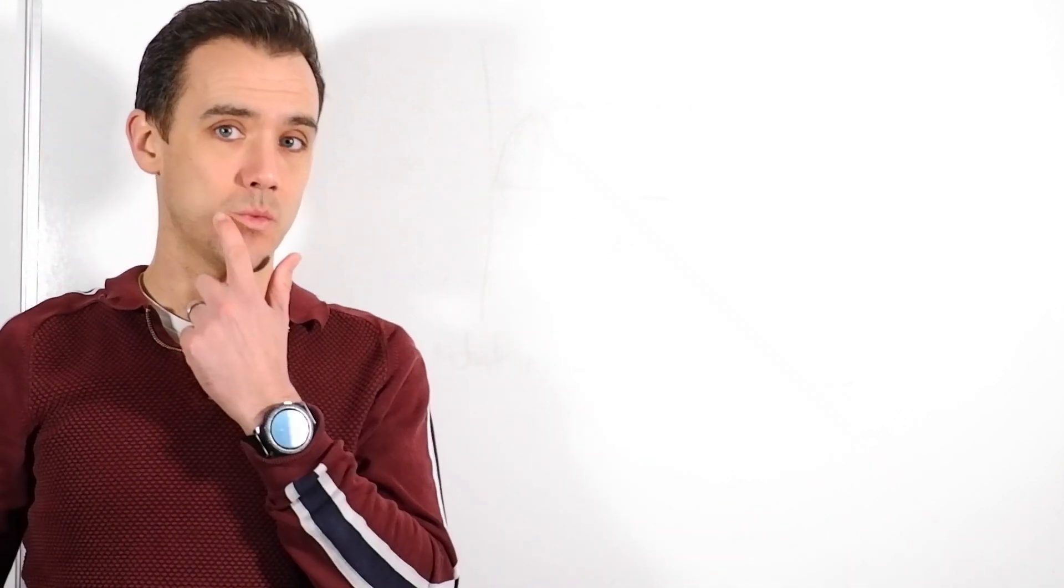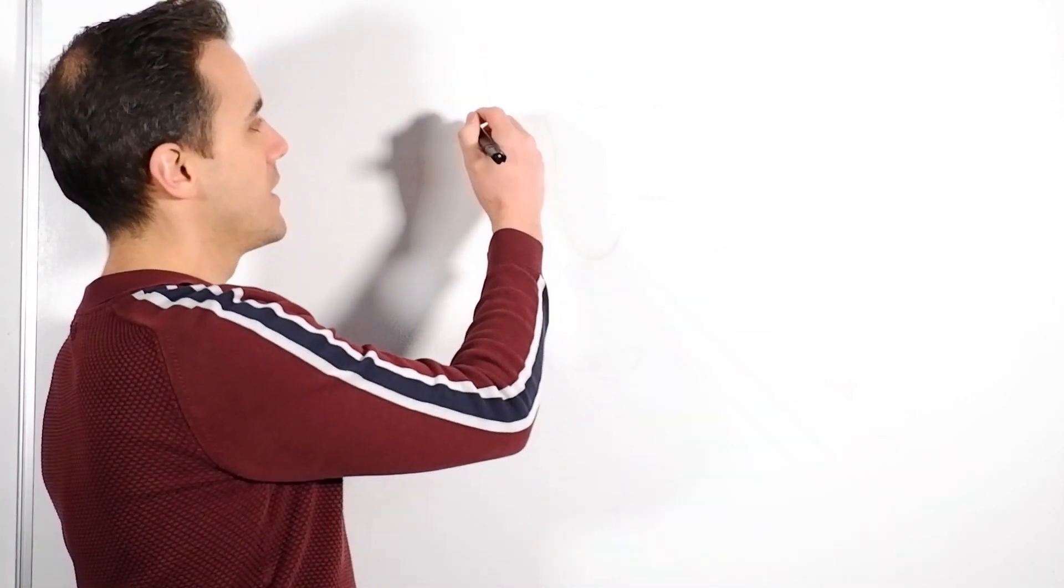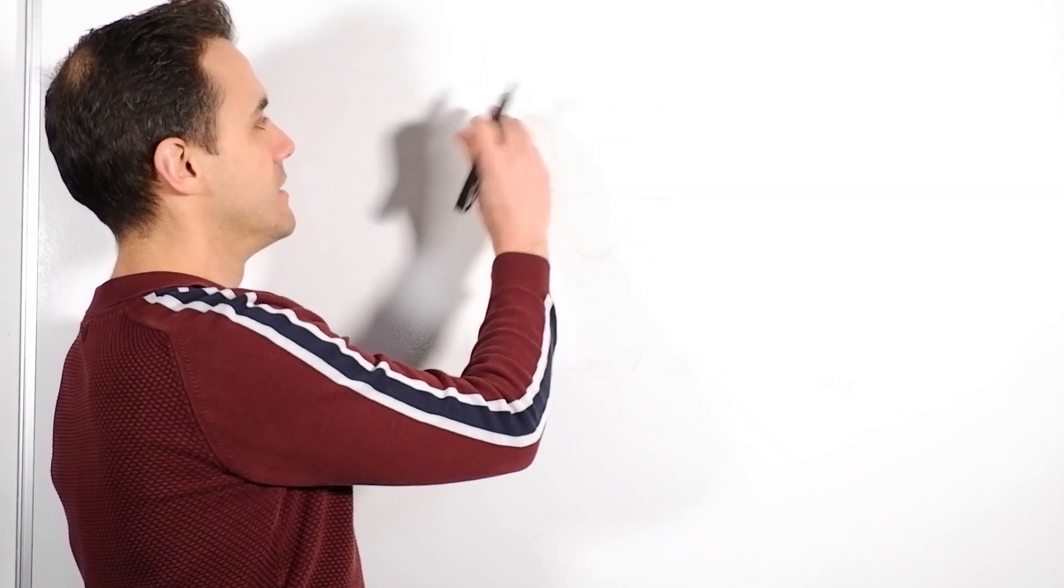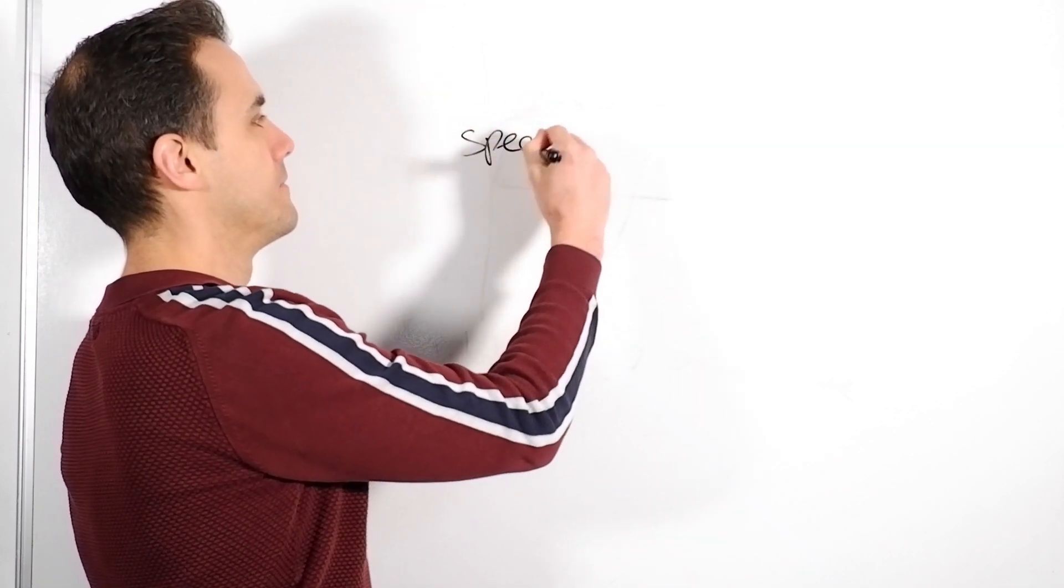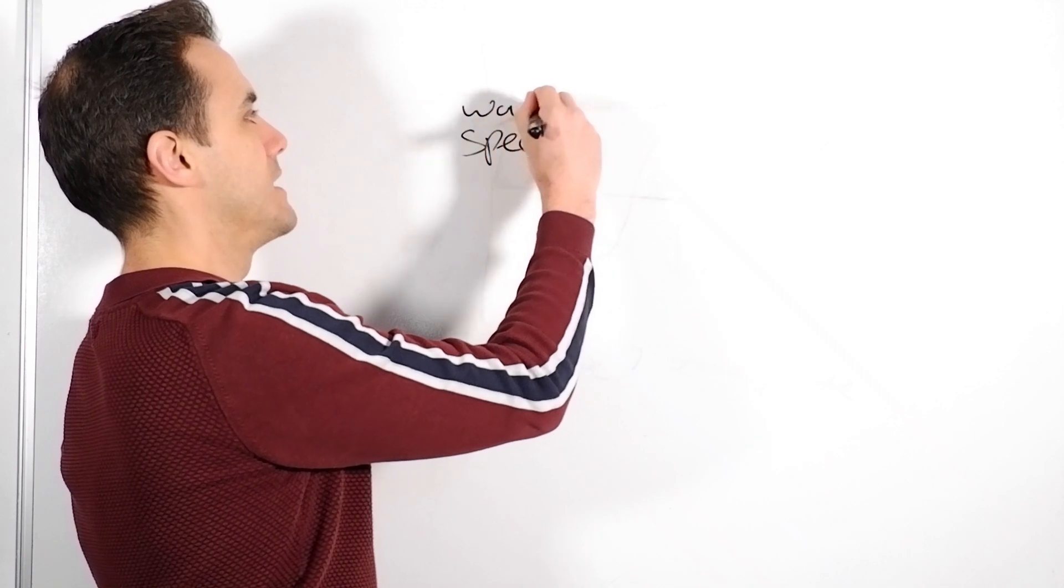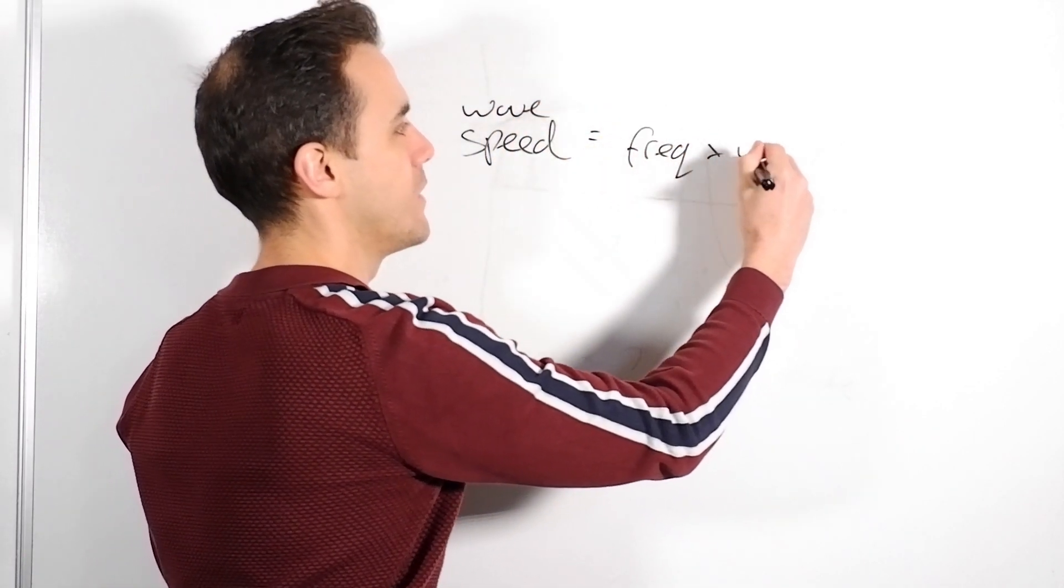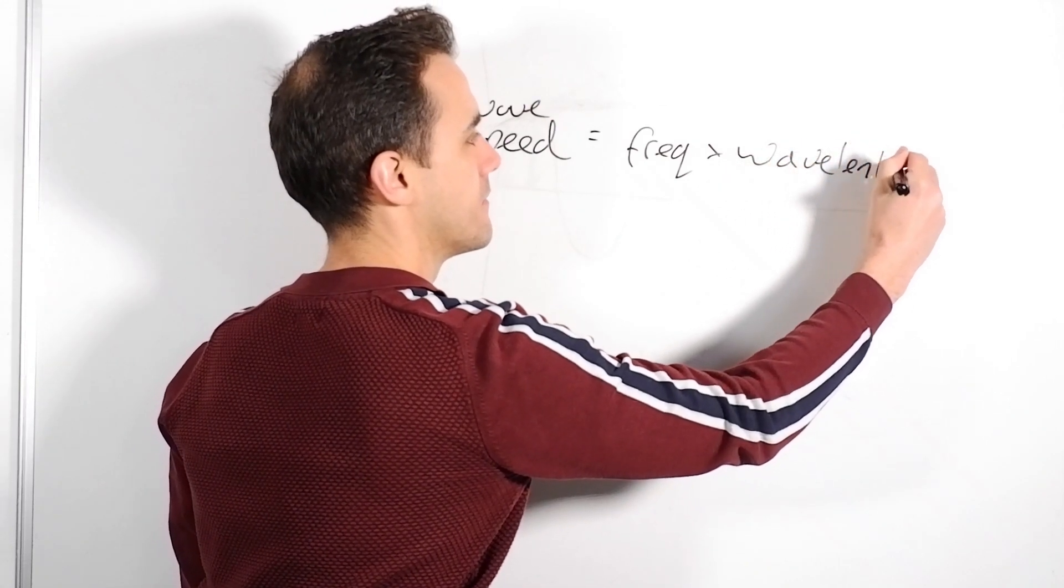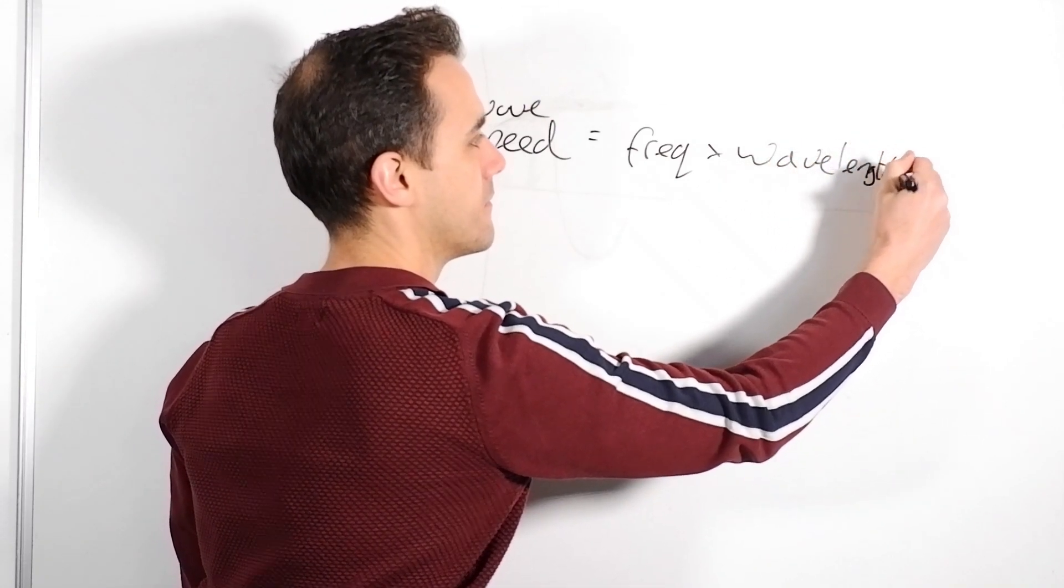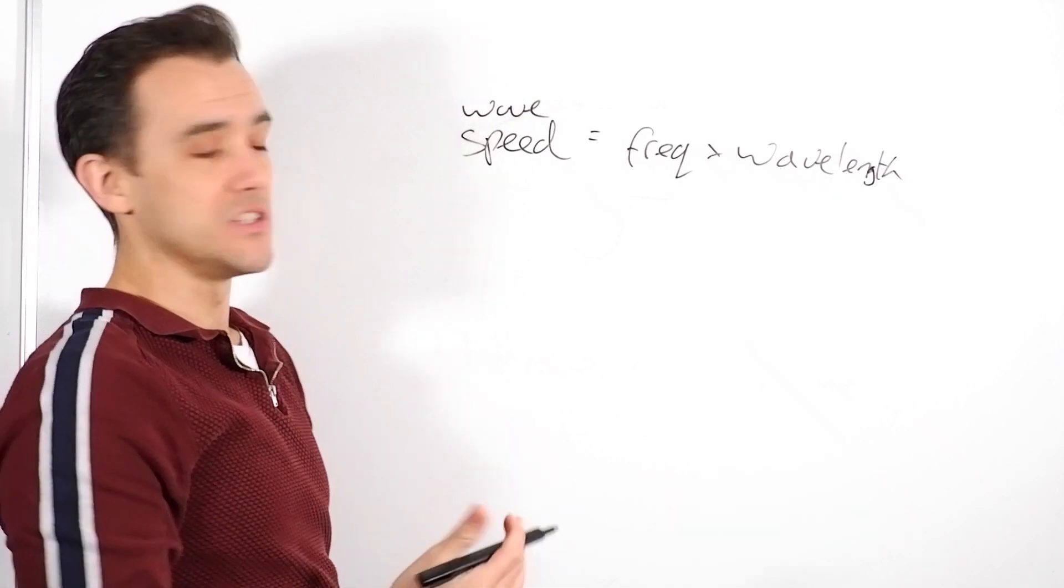So, the other thing they might ask us about is the wave equation. And a lot of people get caught out in questions about the wave equation as well. They do the general classic thing they do, which for some reason catches a lot of people out and they can mix up the units. So, we know the wave equation is that the wave speed is frequency times wavelength.